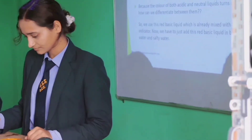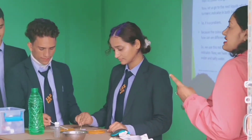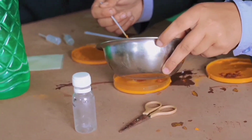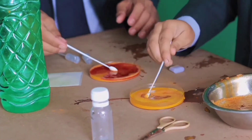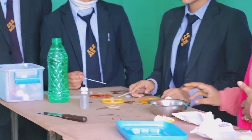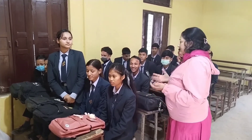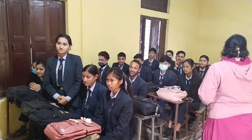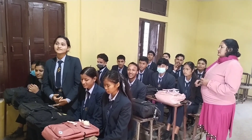So we use this basic liquid which is already mixed with turmeric indicator. The result is amazing. When we mix turmeric indicator in a basic liquid, the color becomes red. When we mix the red basic liquid in an acidic liquid, it neutralizes and becomes light yellow.